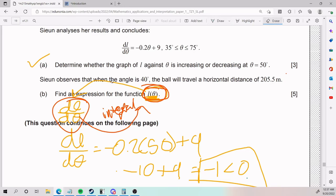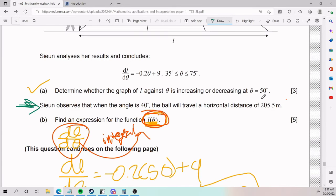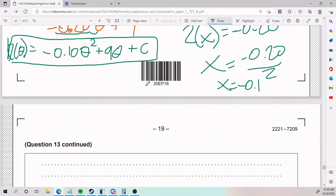And now it makes sense that they gave us this information here, that Sion observes that when the angle is 40 degrees, the ball will travel a horizontal distance of 205.5. That's telling you that when we plug in 205.5 for the distance, we will have a θ of 40. And this is actually a set of points. So that set of points, we're going to plug in down here.